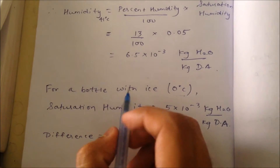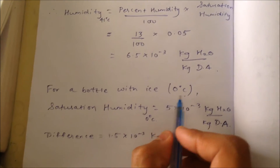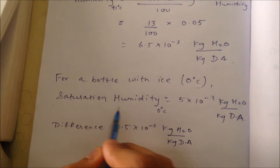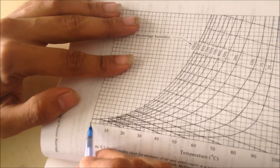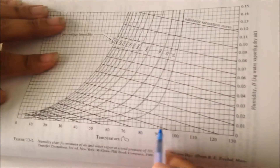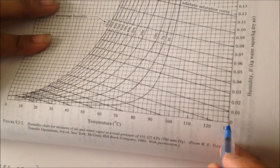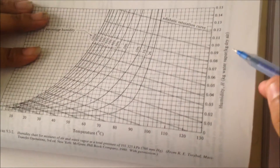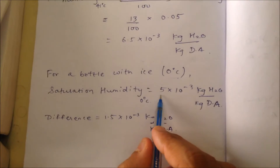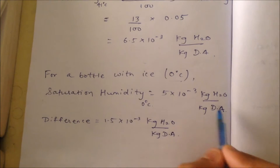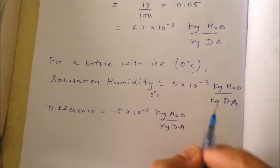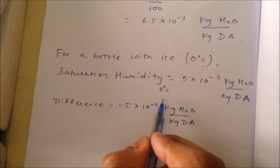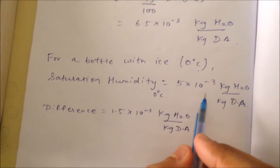Now for a bottle containing ice, the temperature would be around 0 degrees centigrade. For saturation humidity at 0 degrees centigrade, we will again refer to the humidity chart. We will go to the 100% curve and the corresponding humidity value will be 5 × 10⁻³ kg of water vapor per kg of dry air. This is the maximum amount of water vapor 1 kg of dry air can hold at 0 degrees centigrade. Any water vapor above this value will get condensed.